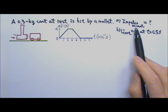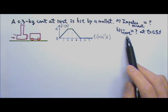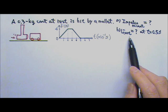Part A: Find the impulse of the mallet on the cart. Part B: What is the final velocity of the cart?